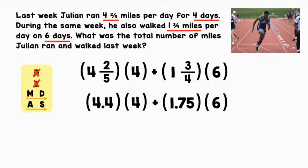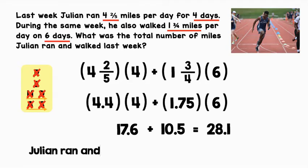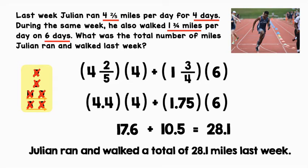Exponents — we don't have any exponents, so let's cross that off. Now we have multiplication and division from left to right, so we're going to multiply from left to right. First, we have 4.4 times 4, which gives us 17.6. Let's bring down our addition sign. Now we have 1.75 times 6, which gives us 10.5. Let's cross off multiplication and division. Lastly, we have addition and subtraction from left to right. I only have addition: 17.6 plus 10.5 equals 28.1. Julian ran and walked a total of 28.1 miles last week.